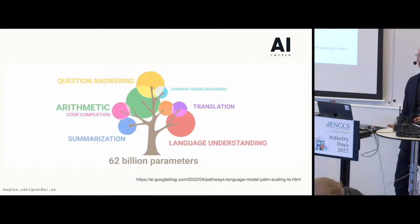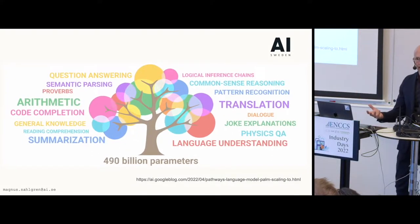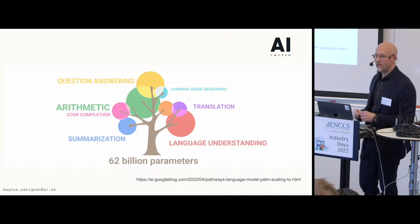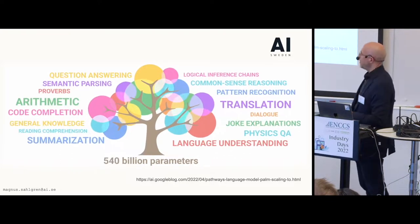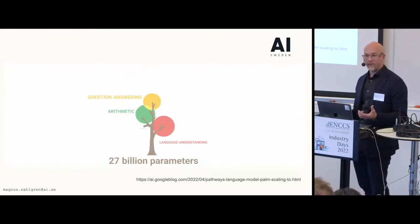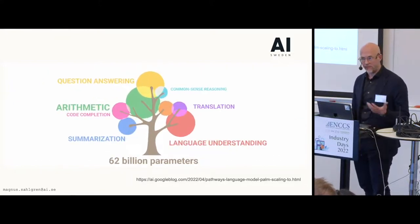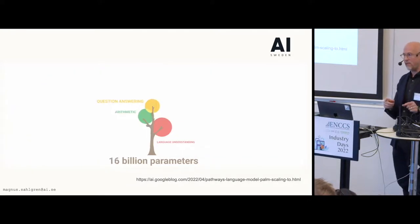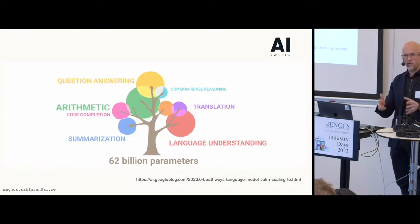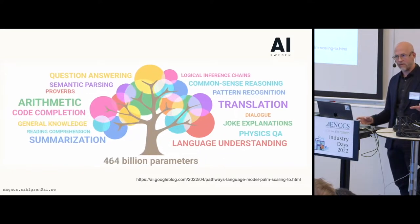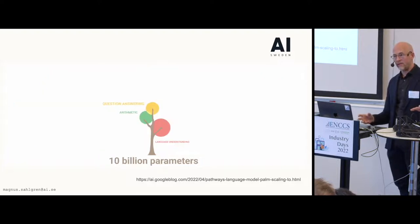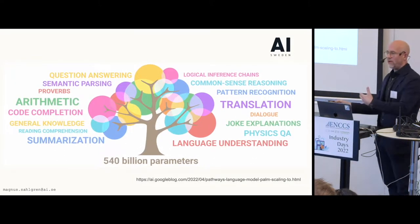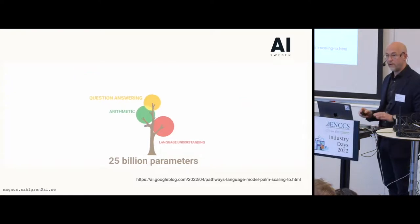And this is why we're interested in scaling these models — not only because it's fun to use supercomputers and do multi-node training over a super pod, but also because the models become better when you scale up both the data and the model size. Not only do they become better at specific tasks, they also become much more general, so we can use one model to solve lots of different problems without fine-tuning. That's why we want to build them for Swedish.